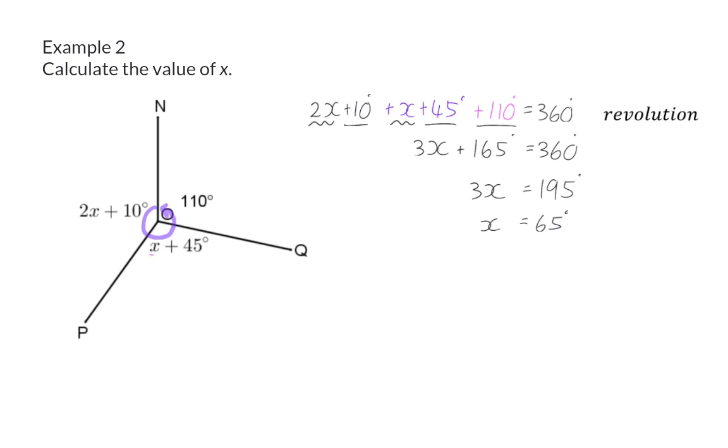If I now change my x values to 65 degrees, the angle in the bottom right will be 110 degrees. And the angle top left will be 2 times 65, which is 130, plus 10 to get 140 degrees. These three angles added up will give me 360 degrees.